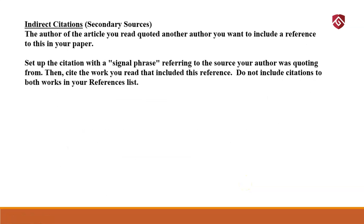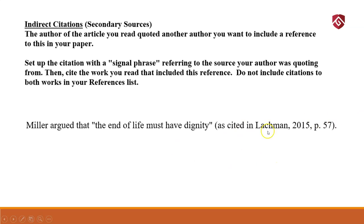This is a really big question I get a lot. Indirect citations — I call these indirect citations; the APA manual refers to them as secondary sources. The author of the article you read quoted another author, and you want to include a reference to this in your paper. Set up the citation with a signal phrase referring to the source your author was quoting from, then cite the work you actually read that included this reference. Do not include citations to both works in your references list. So I read this article by Lachman. Lachman didn't write this entirely from his own research — he was also looking at other authors' works.